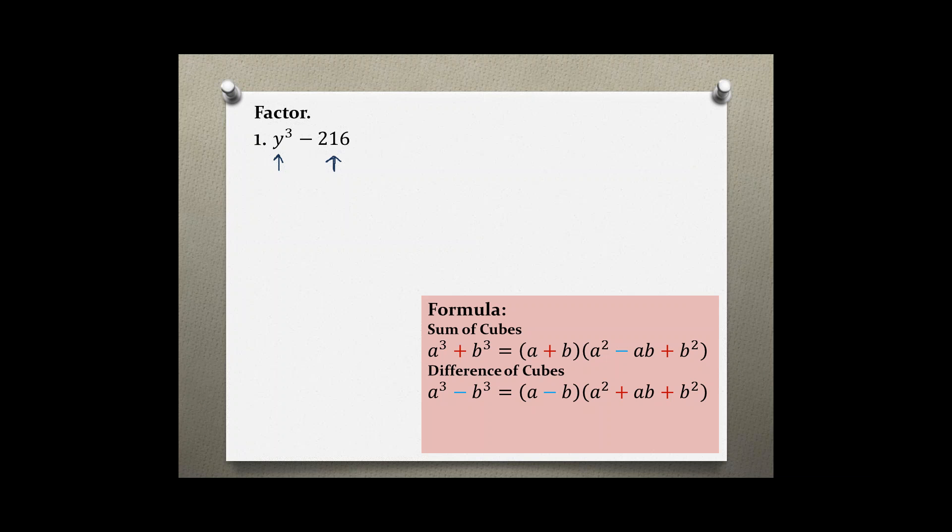In this case, because it has a minus sign, it's the difference of cubes. You need to know the formula: a cubed minus b cubed equals a minus b, times a squared plus ab plus b squared.